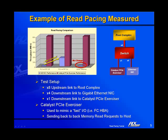As shown in the chart, with Read Pacing enabled, the Ethernet NIC throughput increases by ten times, with no significant change in the throughput of the Catalyst traffic.